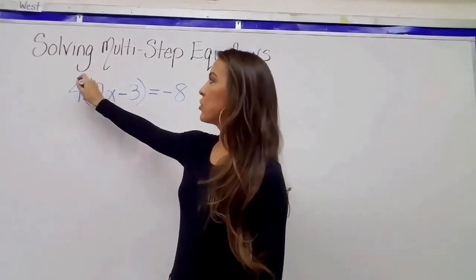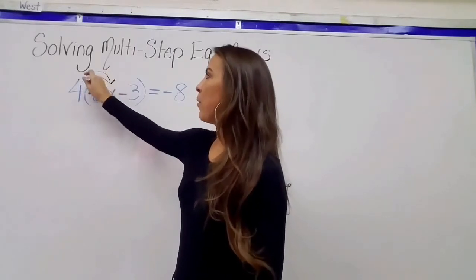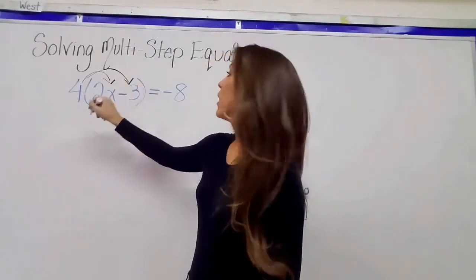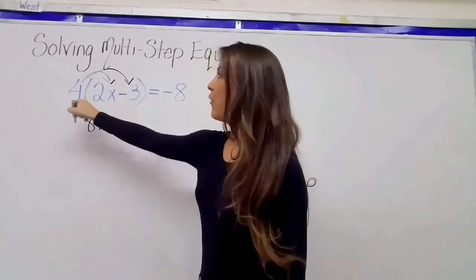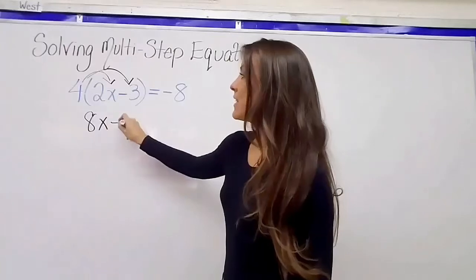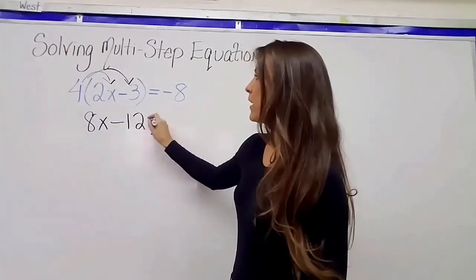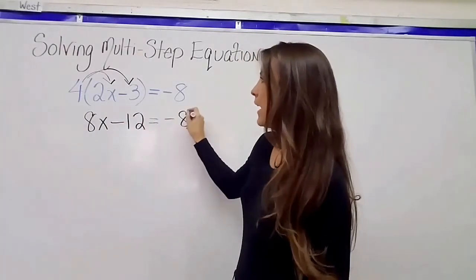So I'm going to start this equation by distributing the 4 to both terms inside of this parentheses. So 4 times 2x is 8x, and 4 times negative 3 is negative 12. I'm going to bring down my equal sign, I'm going to bring down my negative 8.